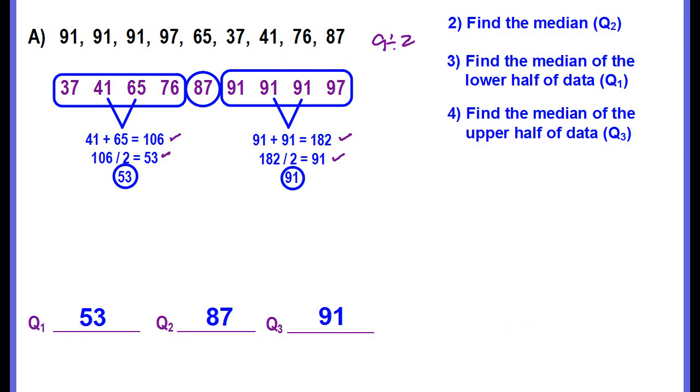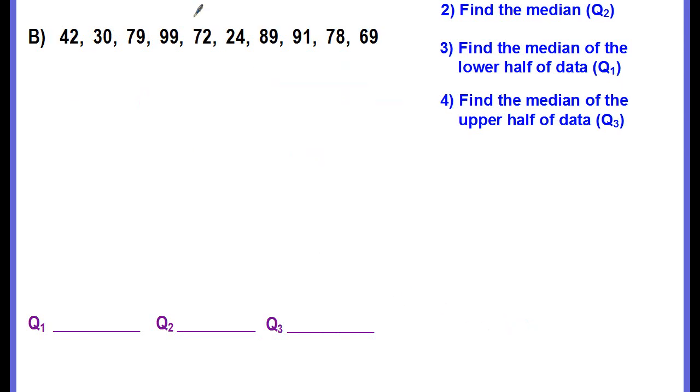Let's do another one. All right. Again, we start off. Here's our data set. We want to order from least to greatest. How many pieces in our data set? 1, 2, 3, 4, 5, 6, 7, 8, 9, there's 10.